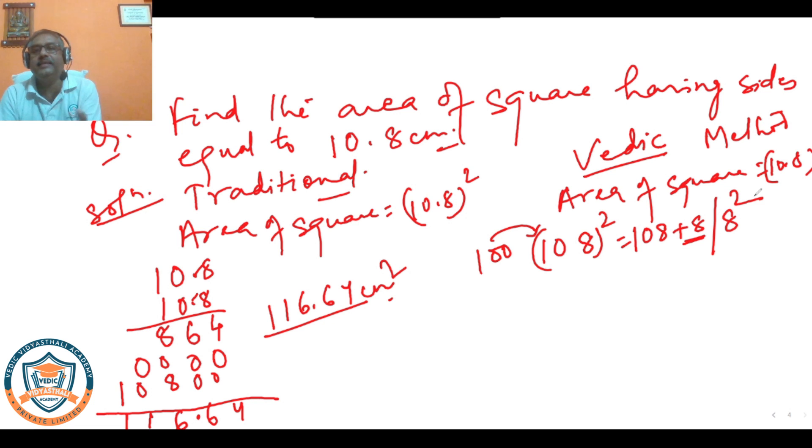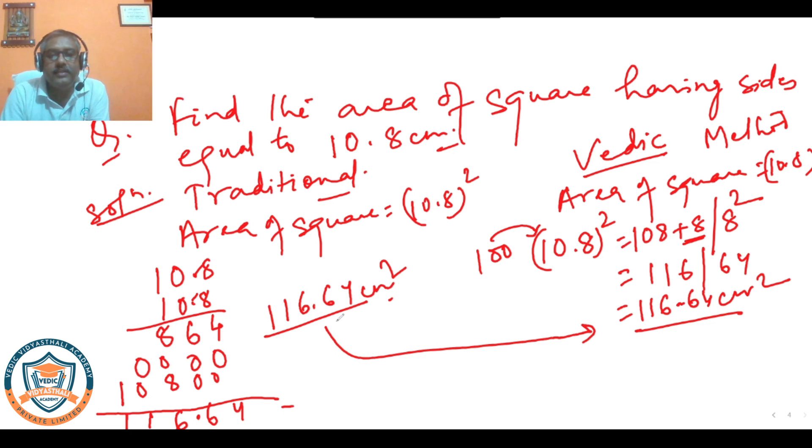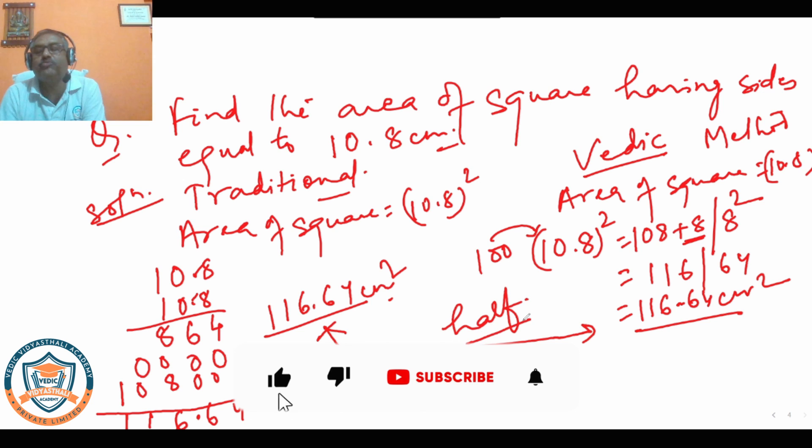Yavadunam says whatever is the difference from the basis needs to be added or subtracted and square of that number. We subtract when number is less than basis, we add when number is more. So here it is 116 and this side 64, so final answer is 116.64. We got the same answer but here it took almost half time, and with practice you can do calculation very very fast using this method.